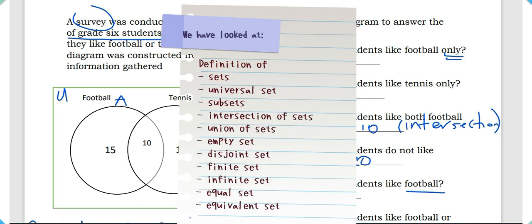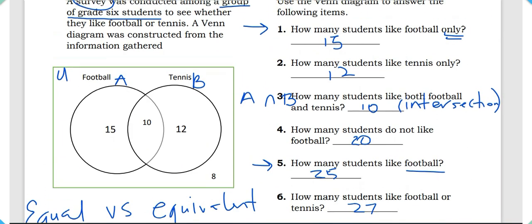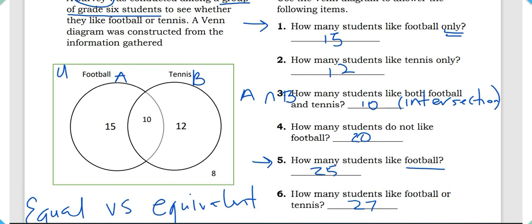We've covered what sets are, the universal set, subsets, union, intersection, empty sets, disjoint sets, overlapping sets, and finite, infinite, equal, and equivalent sets. We've also answered common questions relating to Venn diagrams. I hope that's enough to help you with your upcoming exams. If this video was helpful, please let us know by liking and subscribing. Thank you so much for watching — all the best, and see you again soon!